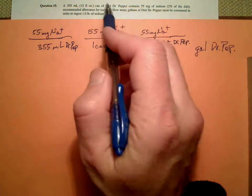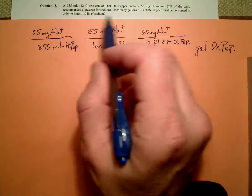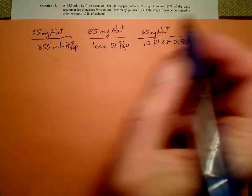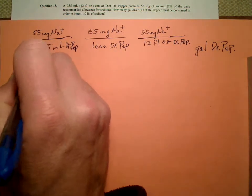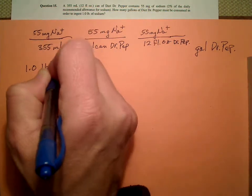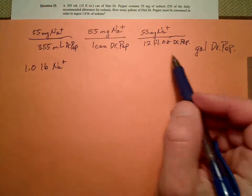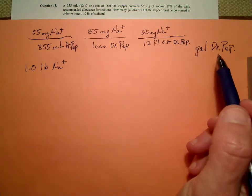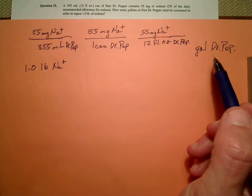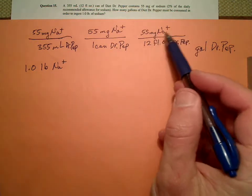So what else do we have? That's it. So the only thing we can start with is the one pound of sodium. So, 1.0 pounds of sodium. We need to get from pounds of sodium to gallons of Dr. Pepper. Do we have any mass to volume conversion? Yeah.